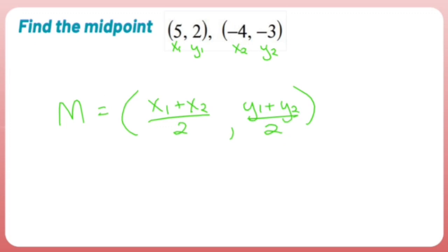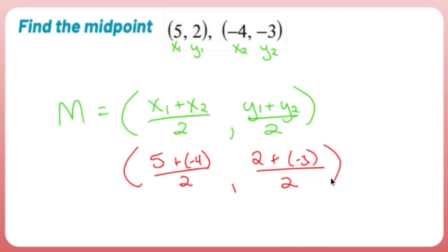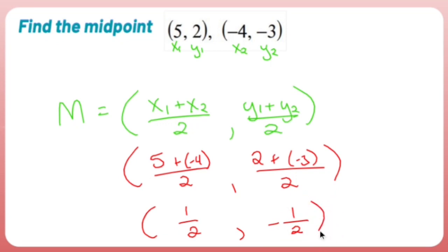Now it's just a matter of plugging in. x₁ is 5, x₂ is negative 4, all over 2. y₁ is 2, y₂ is negative 3, all over 2. So 5 plus negative 4 is 1, giving 1/2. And 2 plus negative 3 is negative 1, giving negative 1/2. So the midpoint is (1/2, -1/2).